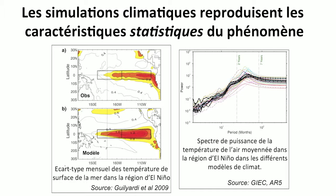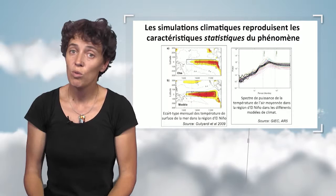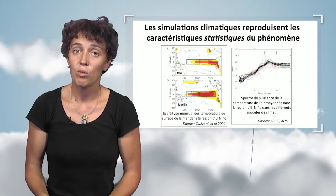However, climatic simulations have no reason to simulate the chronological sequence of events. Therefore, they have no reason to simulate a warmer-than-average winter in 1997 and a colder-than-average winter in 1998. Climatic simulations are not in phase with the observed climatic variability.